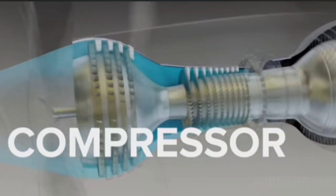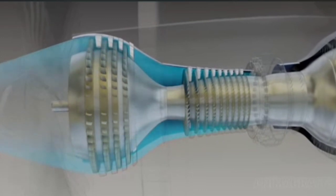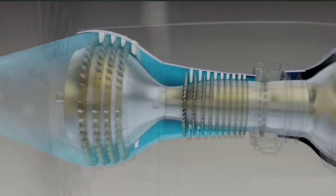Compressor. The compressor compresses air to make for a much more powerful combustion reaction relative to engine size. Compression happens in stages that force incoming air into an increasingly narrow chamber.